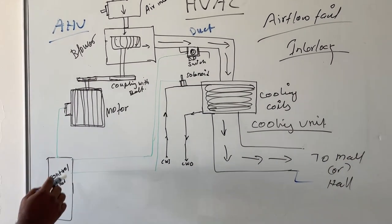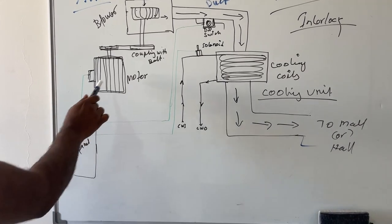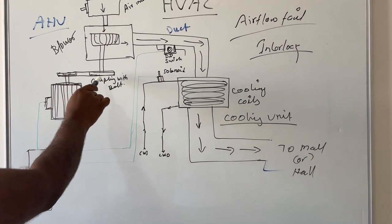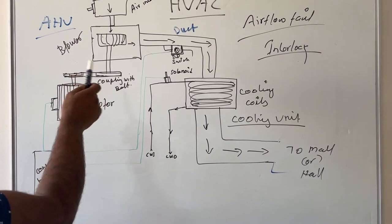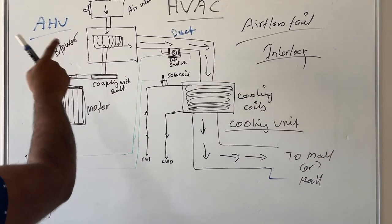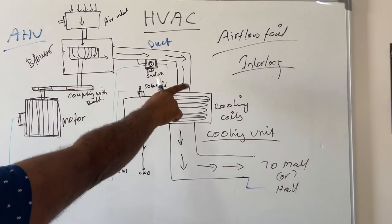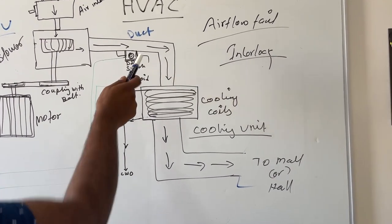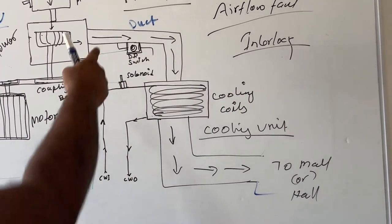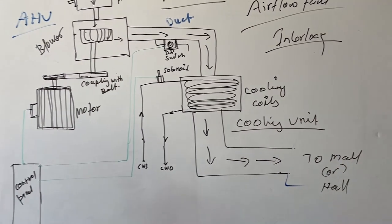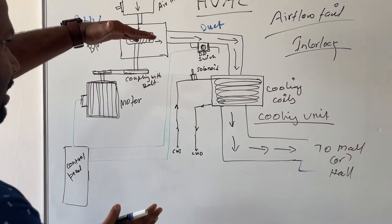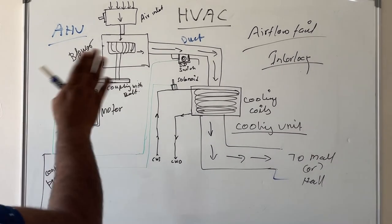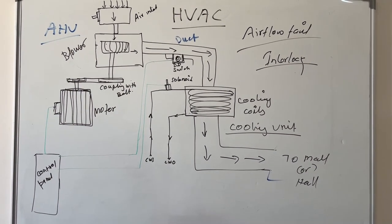Once this motor starts and the blower is rotating, due to the rotation there will be airflow through the duct. Through the duct, the DP switch will observe the small airflow through the micro switch, and it will give a signal to the control panel. By this system we will know that the blower is working and air is flowing through the cooling coils.